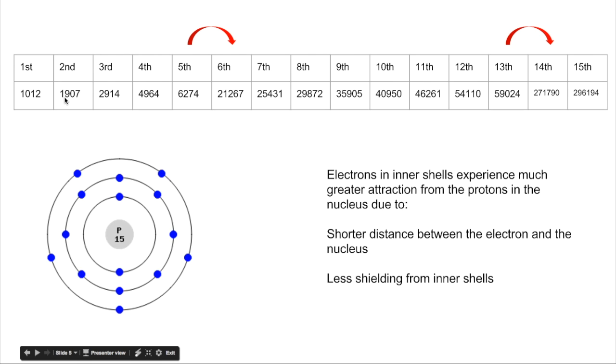So you've got these small increases, and then you've got a very noticeable increase. So that's telling you that the number of electrons before the big jump is how many electrons in the outermost shell, and therefore which group it's in.